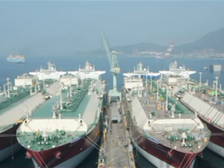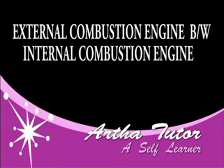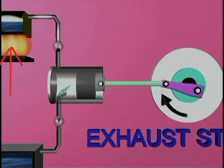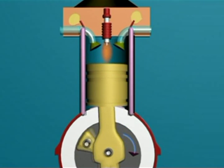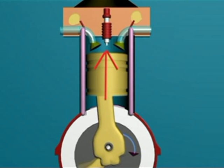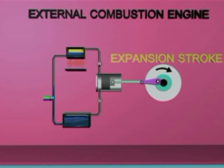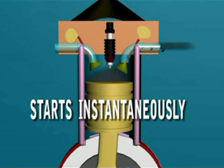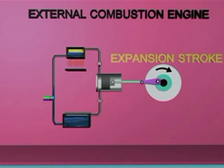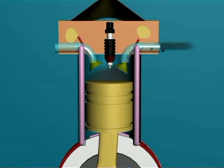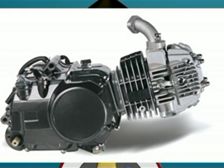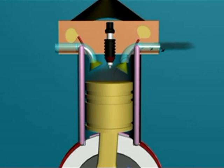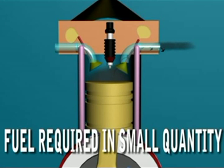Differences between external combustion engines and internal combustion engines: Fuel is burnt outside the engine in external combustion engines, whereas in internal combustion engines the fuel is burnt inside the cylinder. External combustion engines take more time to start, whereas internal combustion engines start instantaneously. External combustion engines are bulky and heavy, whereas internal combustion engines are smaller. The fuel required is generally in large quantity in external combustion engines, whereas the fuel required is in smaller quantity in internal combustion engines.